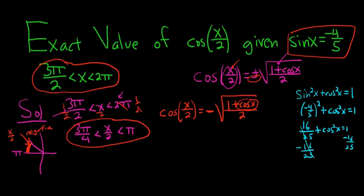In order to do 1 minus 16 over 25, you want to think of 1 as 25 over 25. So 25 over 25 minus 16 over 25 is 9 over 25.